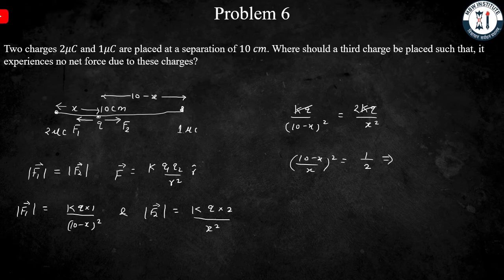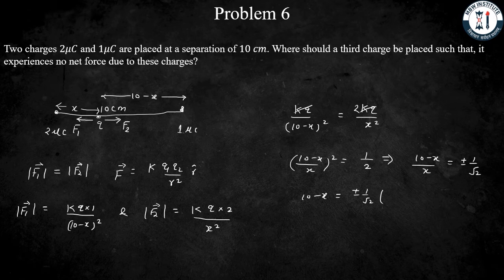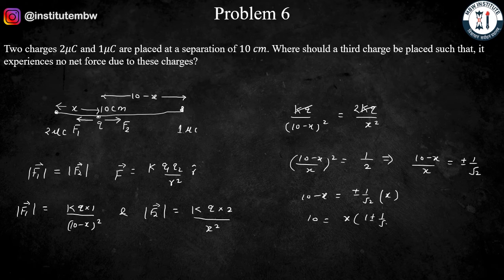Taking the square root, that is (10 minus x) over x is equal to plus minus 1 over root 2. Then 10 minus x is equal to plus minus 1 over root 2. So x is equal to 10 over (1 plus minus 1 over root 2). Now there are two values and which one is the correct?